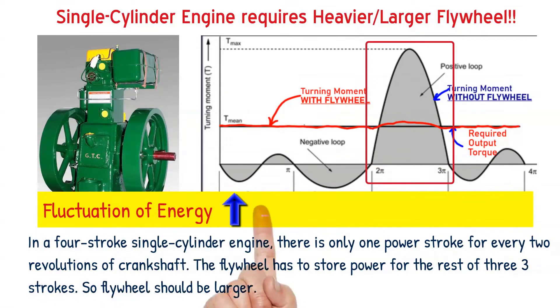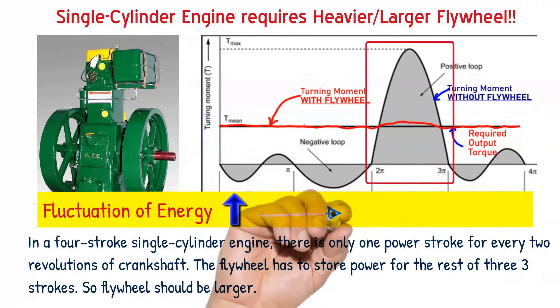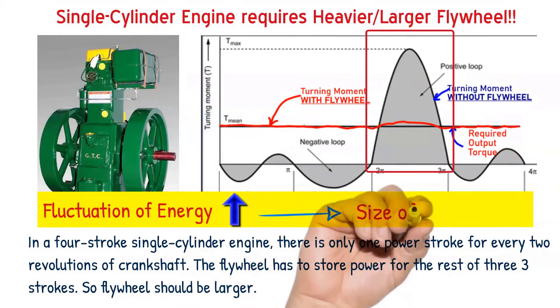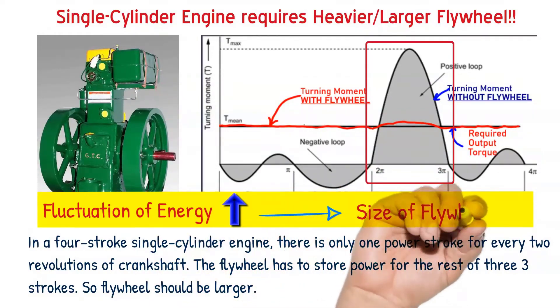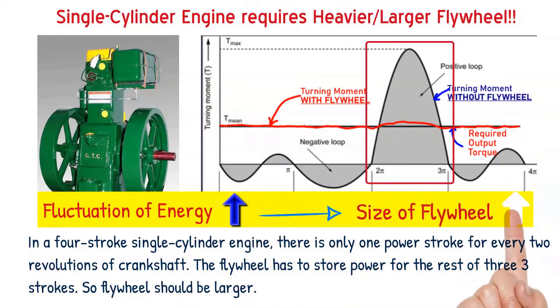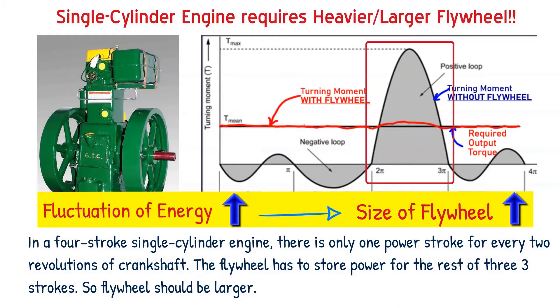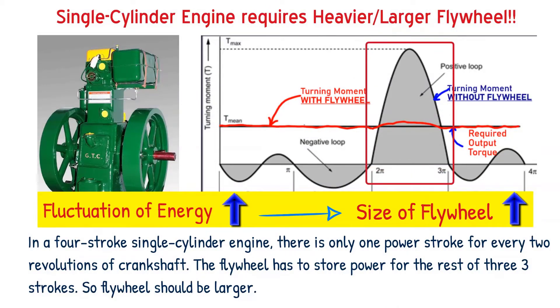As you can see from the turning moment diagram, the fluctuation of energy is very high. The fluctuation of energy delta E is more. The energy-storing capacity of the flywheel should be more, and the size of the flywheel should be larger and heavier.